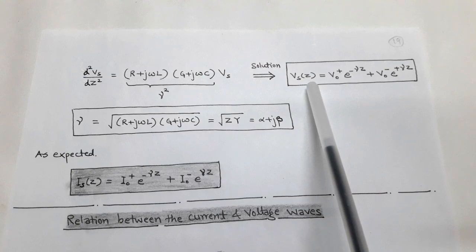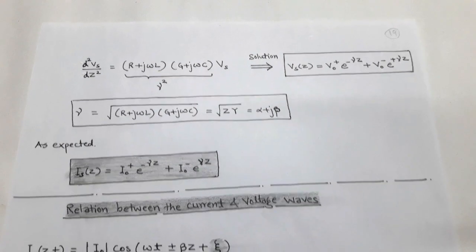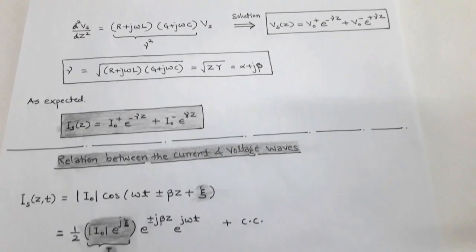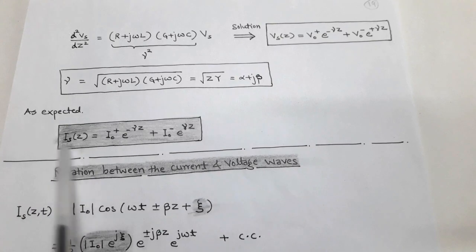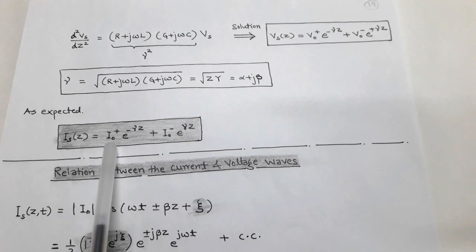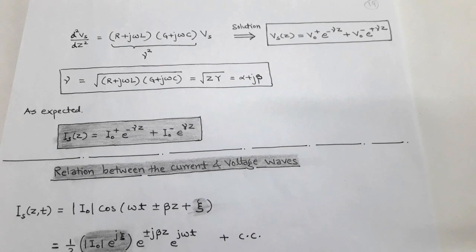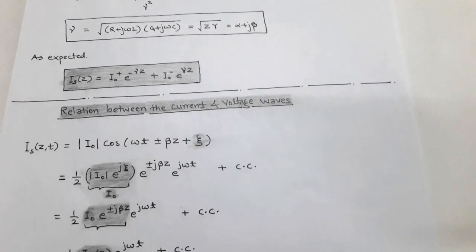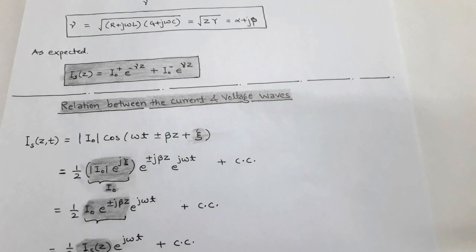The propagation constant γ = √(Z·Y) is a complex variable, so we write it as α + jβ. Similarly, using the general wave equation for the transmission line in terms of instantaneous current, the expected solution is I_s(z) = I₀⁺·e^(−γz) + I₀⁻·e^(+γz). Here I_s(z) is the instantaneous current of the current wave equation for the transmission line.